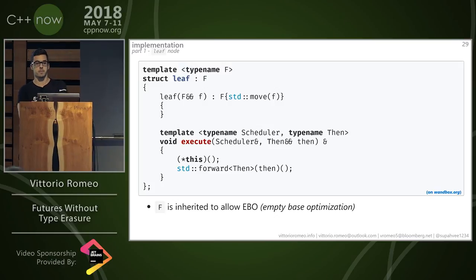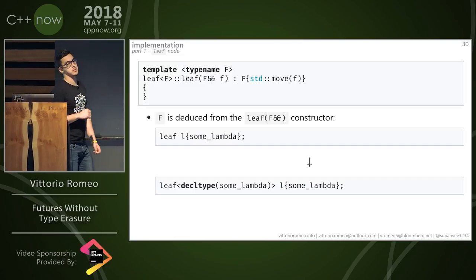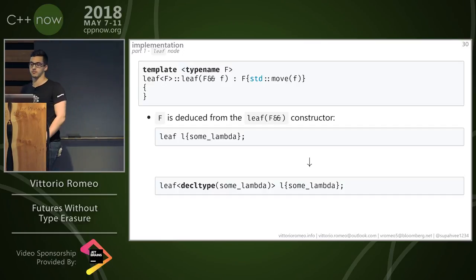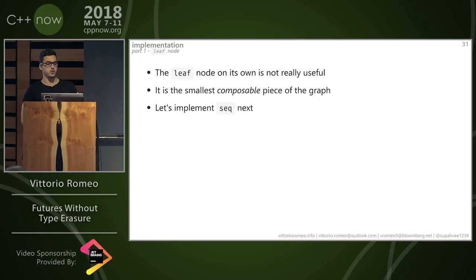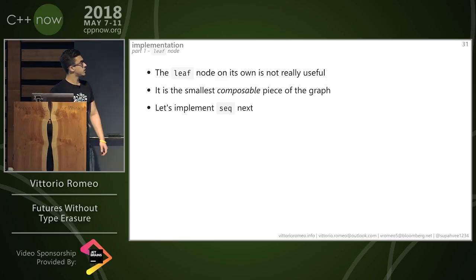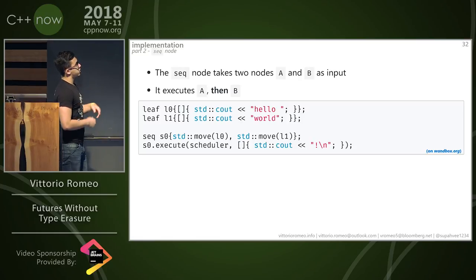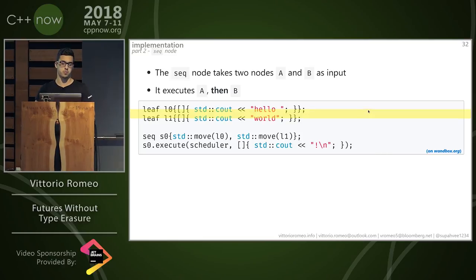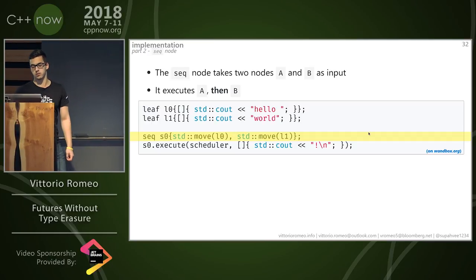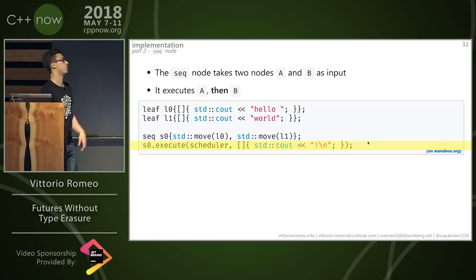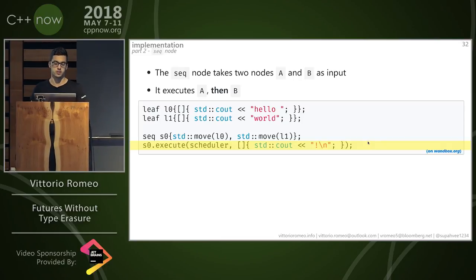The leaf node alone isn't very useful, but it's the smallest composable piece of the graph. The sequential node takes two nodes A and B and executes A then B. If you have two leaves L0 and L1 — the first printing "hello", the second "world" — place them inside a sequential node by moving them in the constructor. When you execute the sequential node with a scheduler and continuation, it executes L0 first, then L1, then the provided continuation — printing "hello world!".